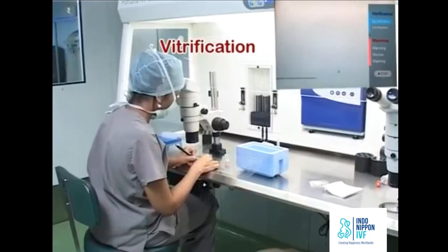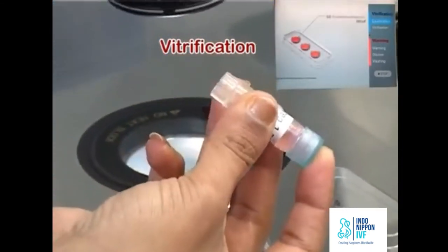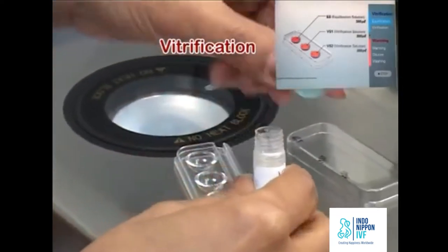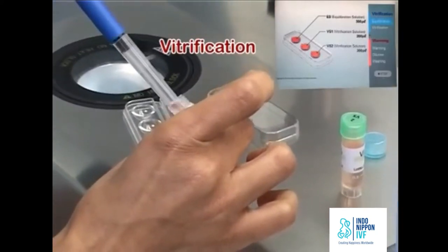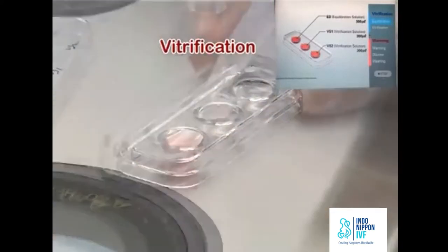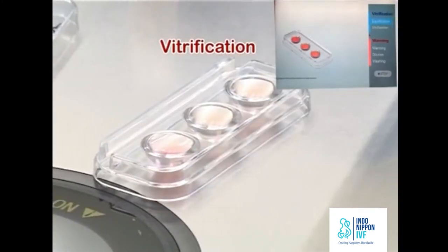Write ES, VS1, and VS2 on the lid of the vitriplate. Fill the wells of the vitriplate with 300 microliters of ES, VS1, and VS2 respectively. Put the lid back on the vitriplate immediately.